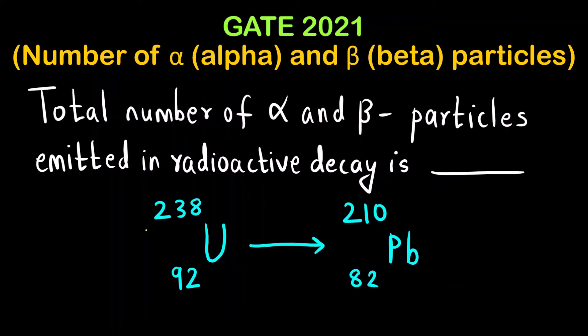This is a question from GATE 2021 chemistry paper based on the number of alpha and beta particles from nuclear chemistry. We have to find out the total number of alpha and beta particles emitted in radioactive decay.